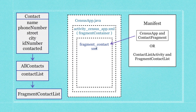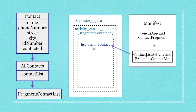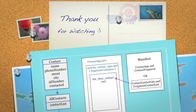At this point we have Contact set up, AllContacts set up, and I reviewed how CensusApp works, how the fragment container works, and how ContactFragment properly sets up the layout fragment_contact inside CensusApp. Because this tutorial is getting long, I'm going to end it here. In the next part I'll cover how ContactListActivity, FragmentContactList, and our adapter are going to work to show a list of contacts. Please leave any questions or comments below, and all the code is available in a link in the description.